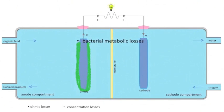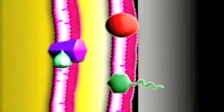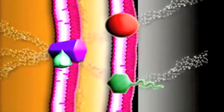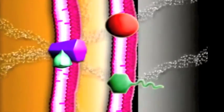Bacterial metabolic losses can be described by the amount of energy that is used by the microbes to grow. The energy is harvested to form a proton gradient over the inner membrane.